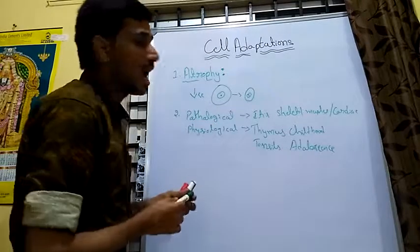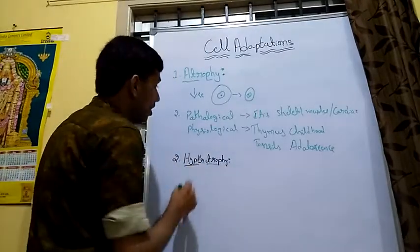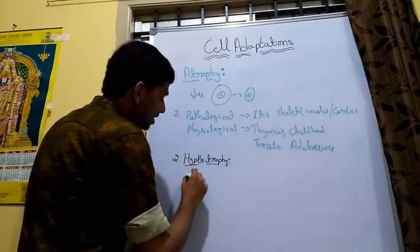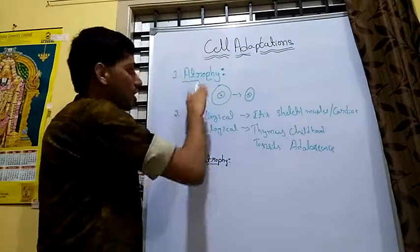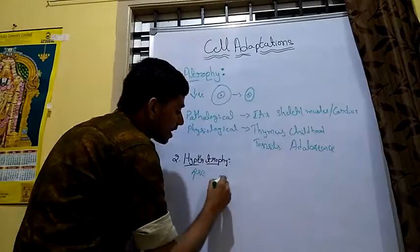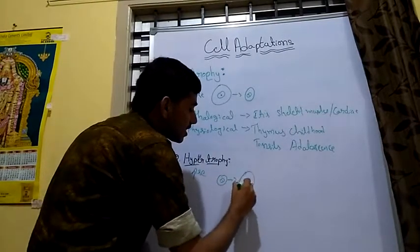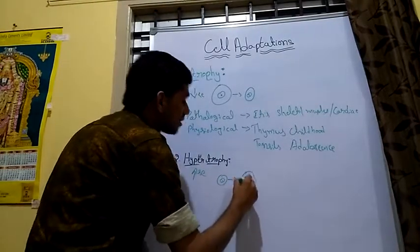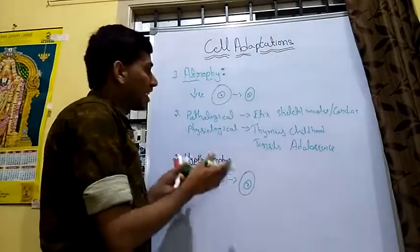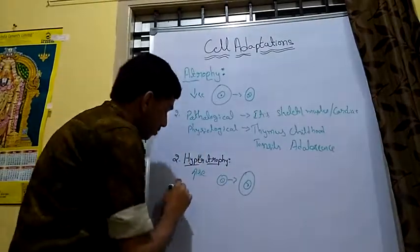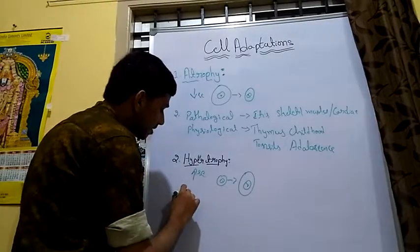Next, we move to hypertrophy. Hypertrophy means increase in size of a cell. It is the reverse of atrophy — a normal cell increases in size due to any environmental or other conditions. In hypertrophy, there are three types.